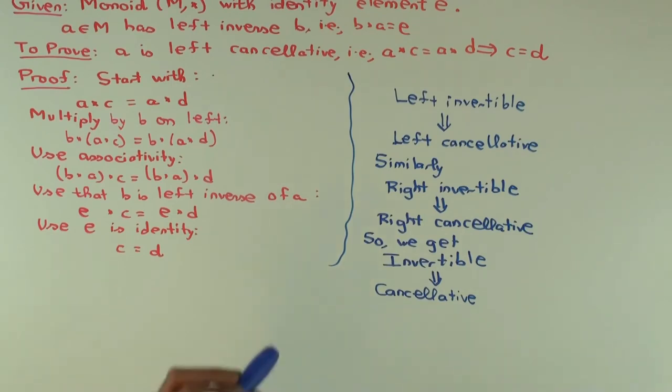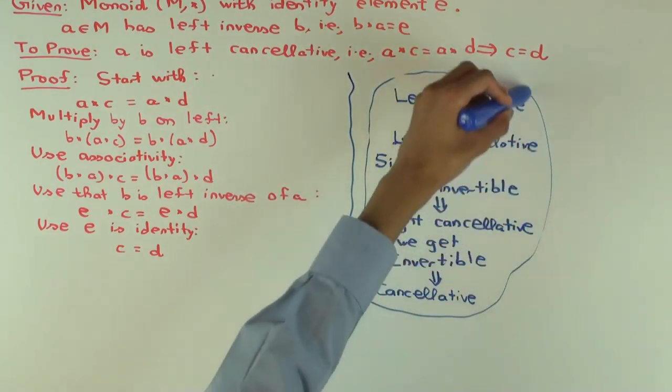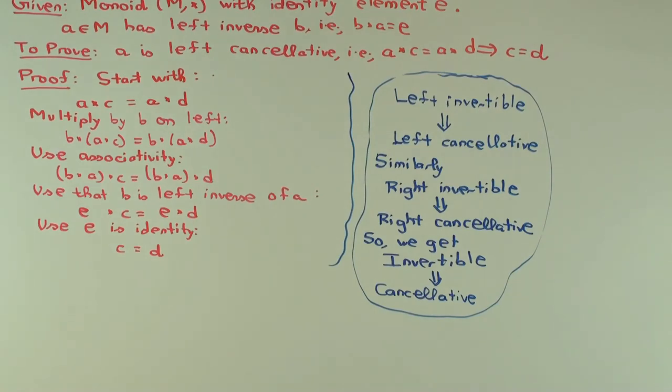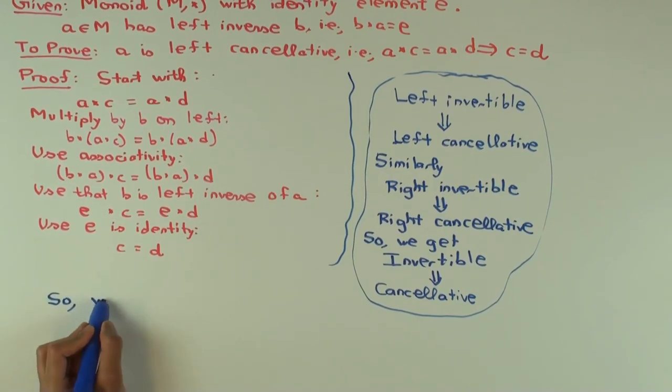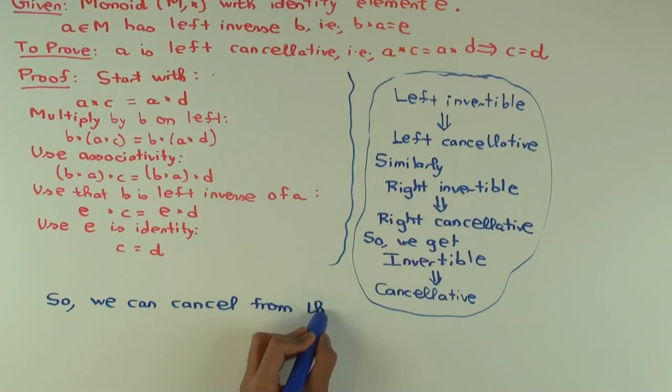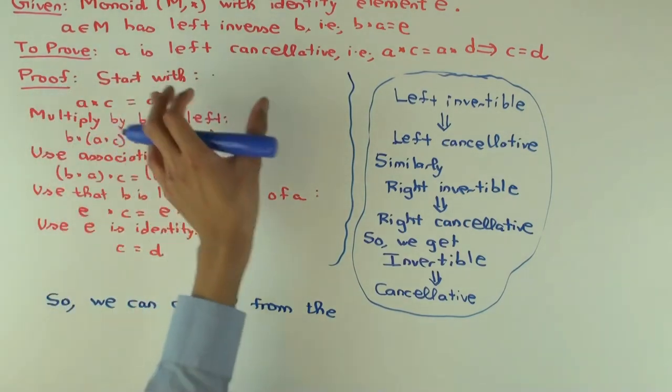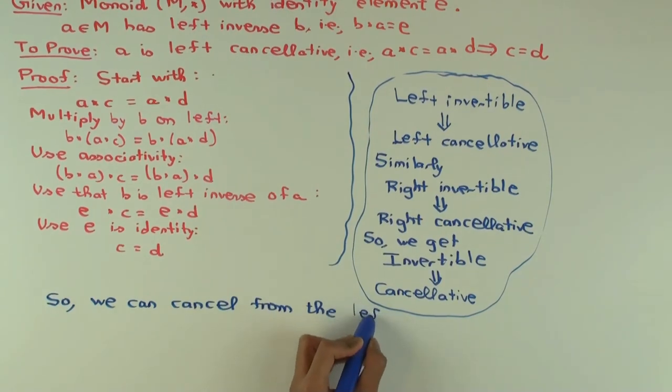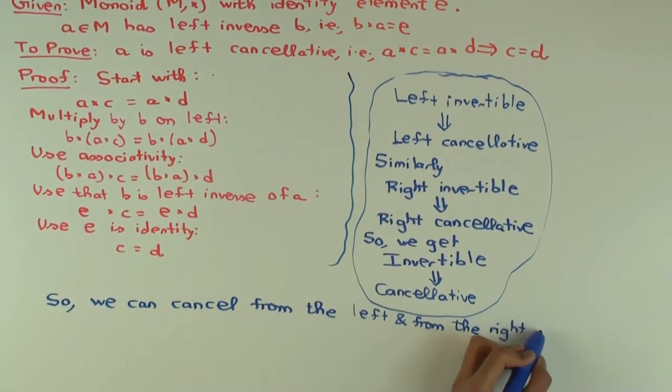Now how is this important in the context of groups? Well in groups, which elements are invertible? Every element. Which means that every element in a group can be cancelled on the left and on the right. So the upshot is that cancellation can be done from the left and from the right in a group. But we have to cancel from the same side on both - if one expression equals another, I cannot cancel the left here with the right there. I have to cancel the left with the left and the right with the right. So does that give you a better feel for groups?